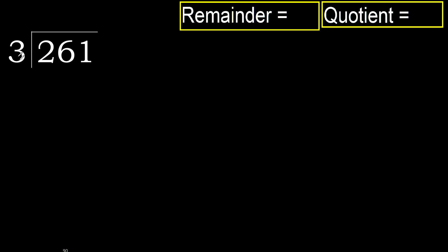261 divided by 3. 2 is less, therefore next. 26 is not less, therefore proceed with 26.